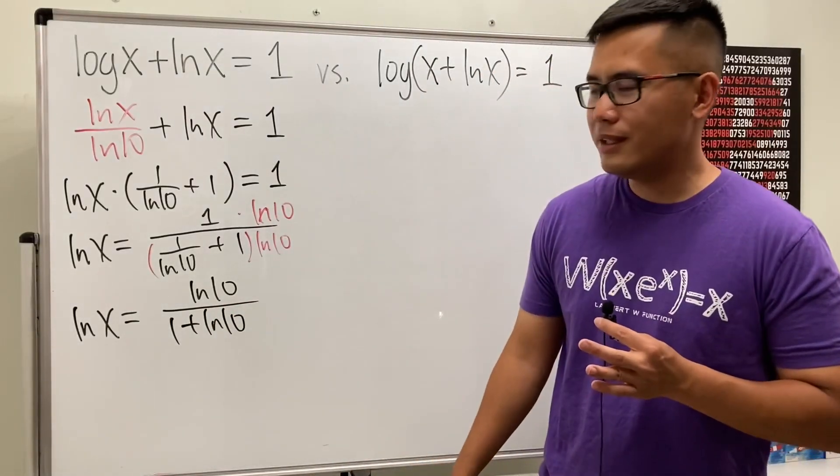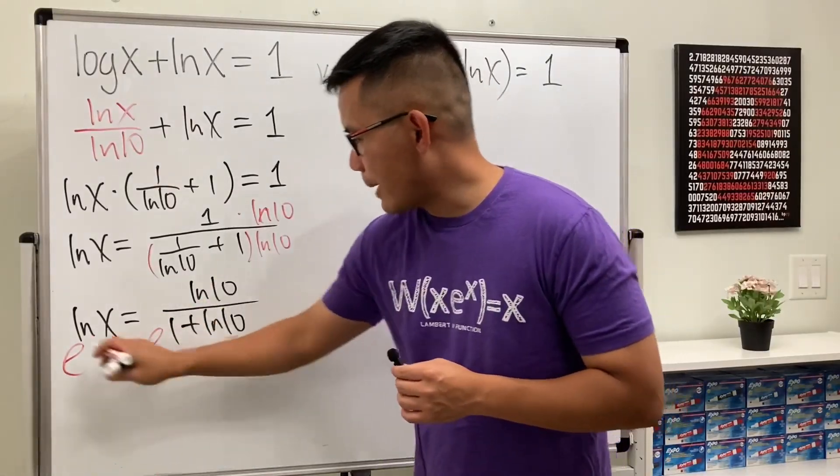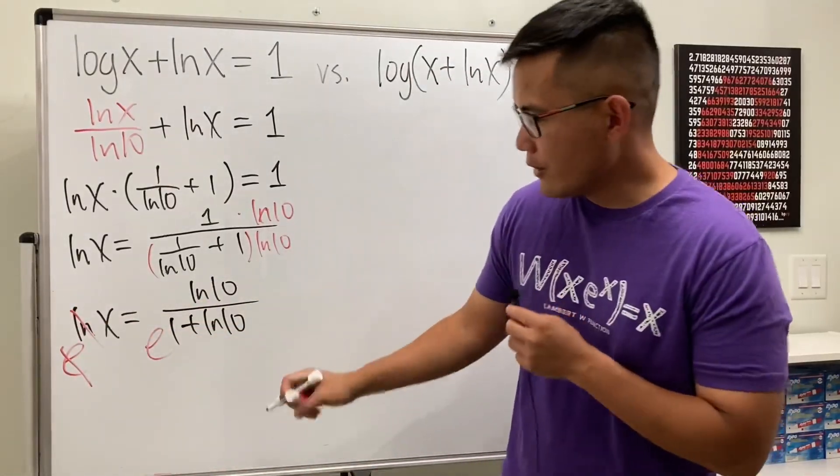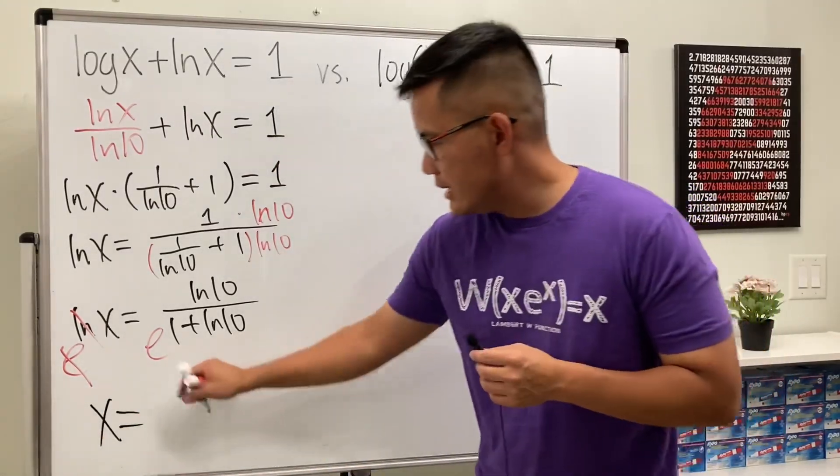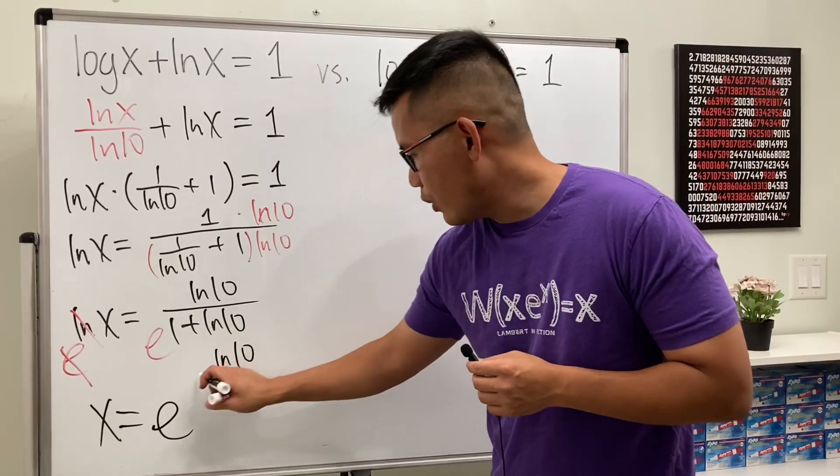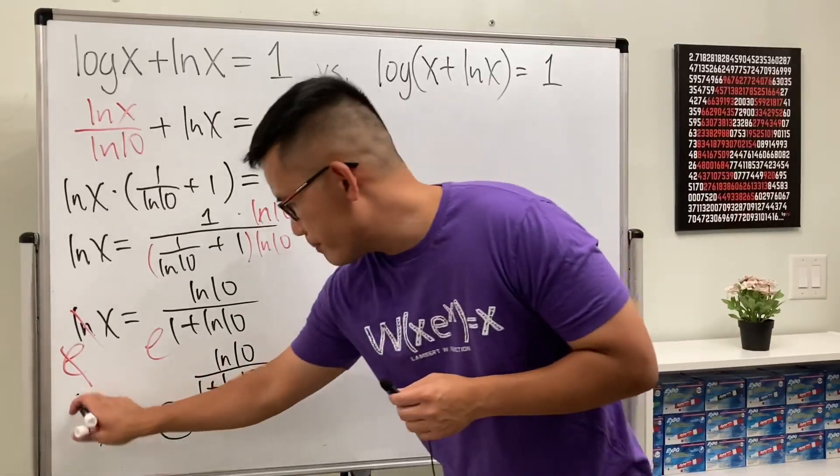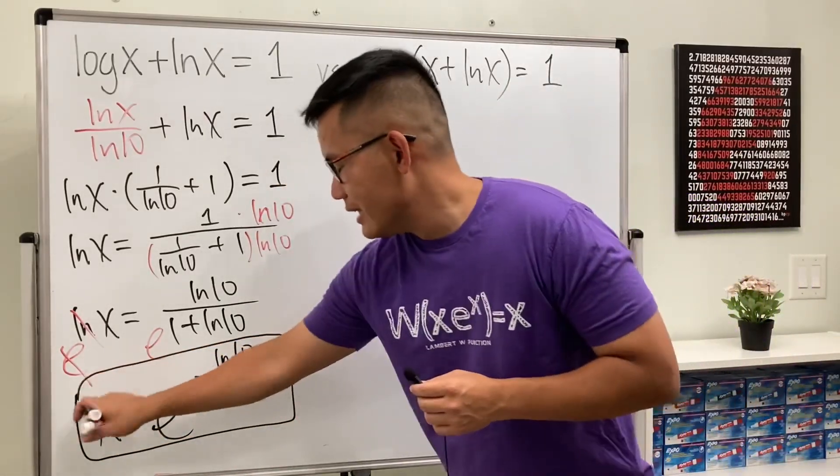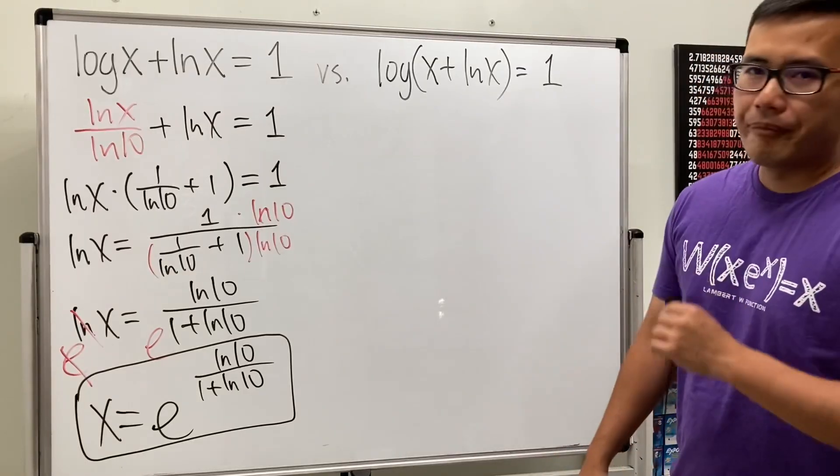And then, we do e to the power, and e to this power, they cancel. So finally, ladies and gentlemen, x is equal to e to this power, which is ln 10 over 1 plus ln 10. So this right here. Pretty crazy looking answer. But now,